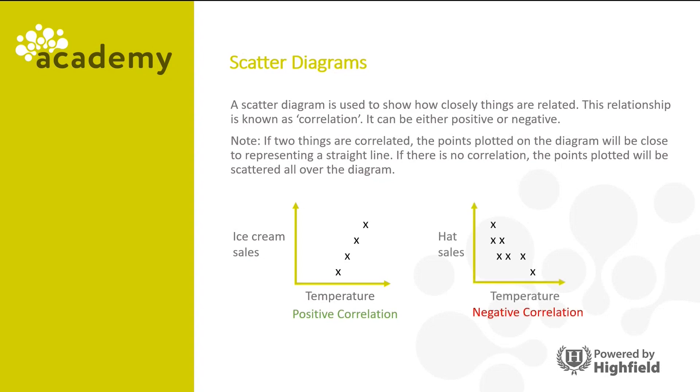This is an example of negative correlation. Although it's less clear, there is still more or less a straight line, and as one value increases, the other value decreases.